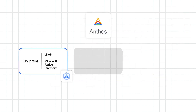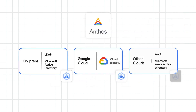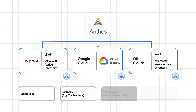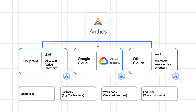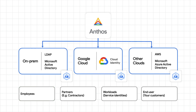Anthos spans across multiple environments, and each is built on a different identity store. For example, Active Directory for on-prem, Cloud Identity for Google Cloud, and AWS IAM for AWS. In addition to employee identity, you may need to manage partner, vendor identity, workload identity, or customer identity.